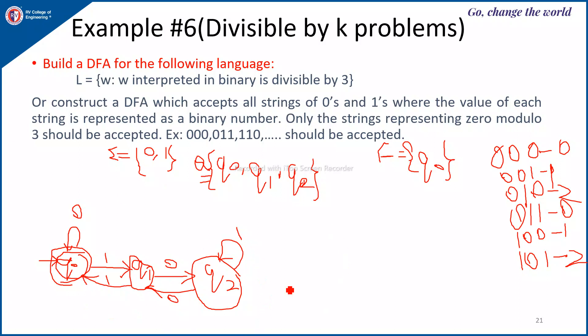To verify: string 000 is accepted. String 01101 — following the transitions — is accepted. String 001 will not be accepted since it represents 1, which is not divisible by 3. Likewise, this machine correctly accepts only multiples of 3 in binary.